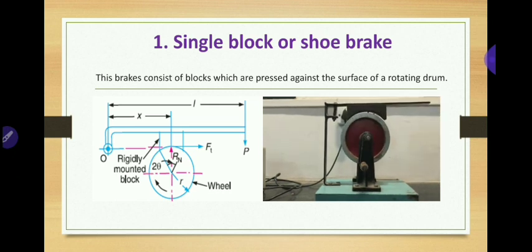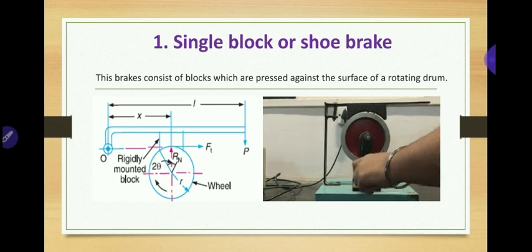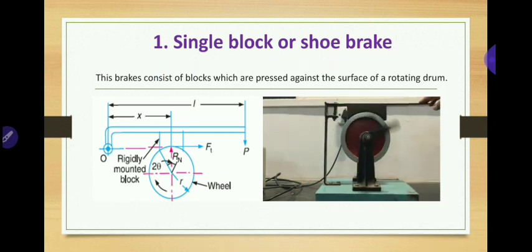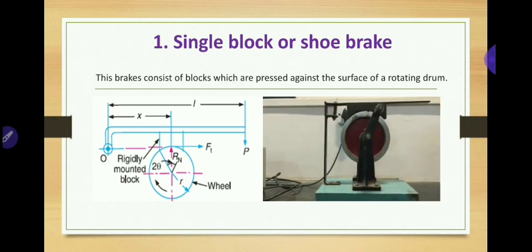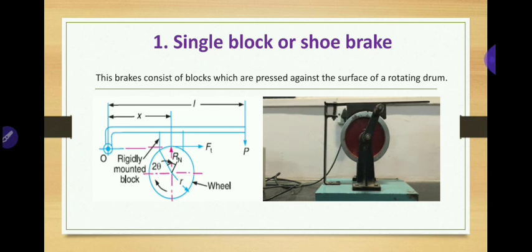The single block or shoe brake consists of a block or shoe which is pressed against the rim of the revolving brake wheel drum. The block is made of a softer material than the rim of the wheel. This type of brake is commonly used in railways and tram cars. The friction between the block and the wheel causes a tangential braking force to act on the wheel. As the rotor rotates clockwise, the frictional force Ft acts in the right-hand direction.